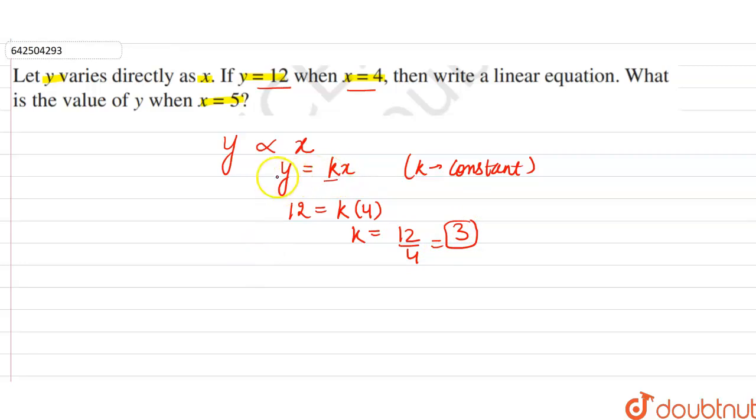Now let's put the value of k in equation y is equal to kx. So y is equal to 3x. So this is the linear equation. So we have solved this part of the question that write a linear equation. So the linear equation is y is equal to 3x.